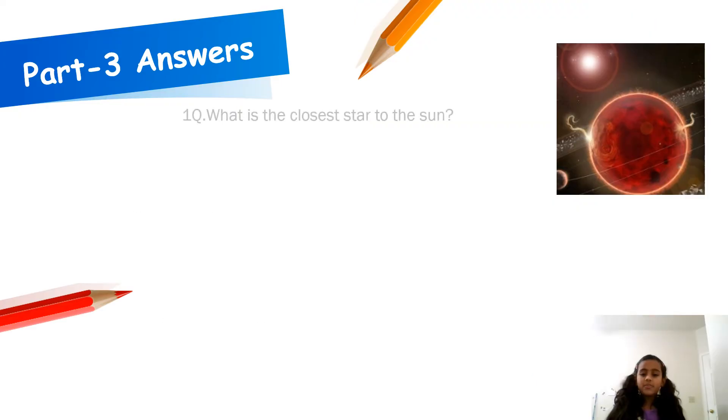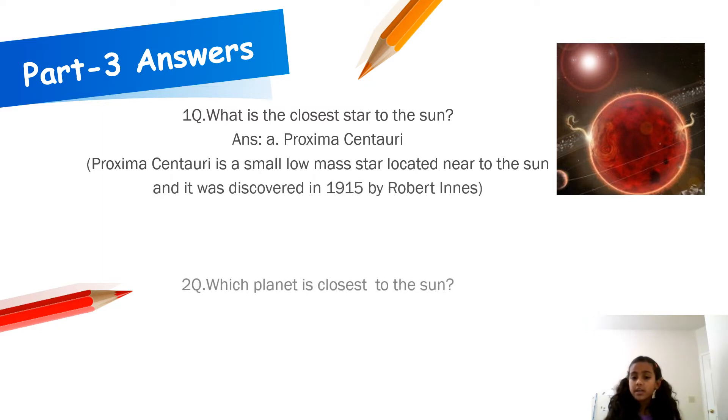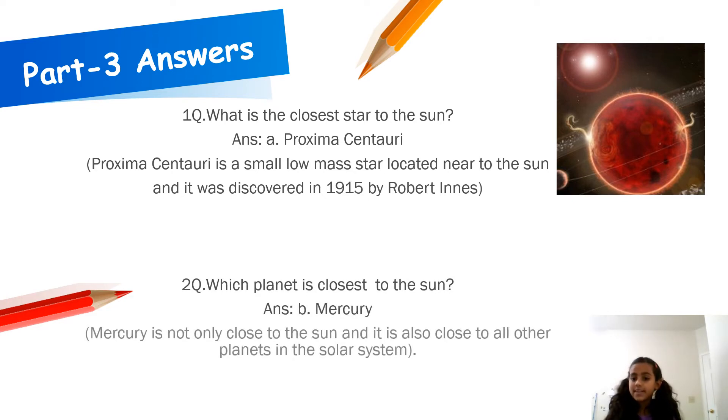Part 3 Answers. Question 1. What is the closest star to the Sun? Answer: Proxima Centauri. Proxima Centauri is a small, low-mass star located near to the Sun. It was discovered in 1915 by Robert Innes.